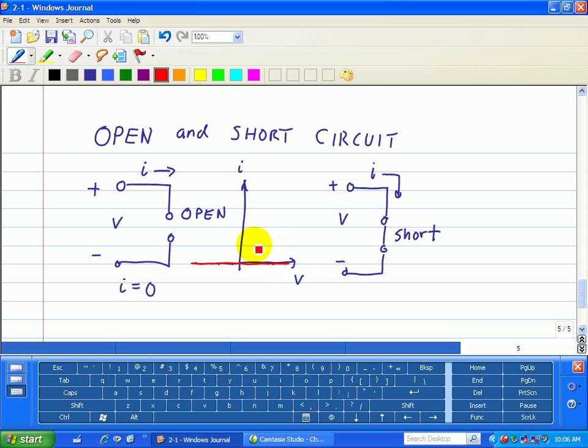And the slope of this line, the slope we know is one over R.